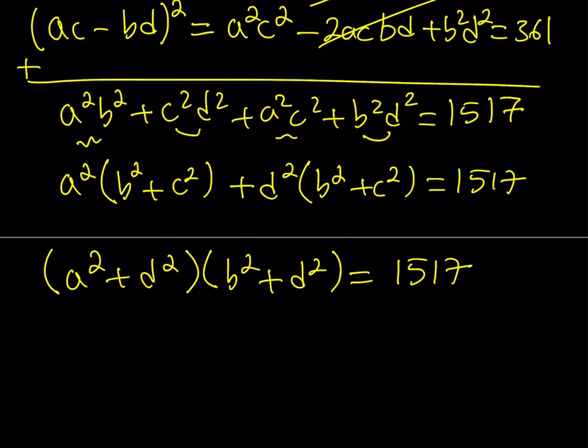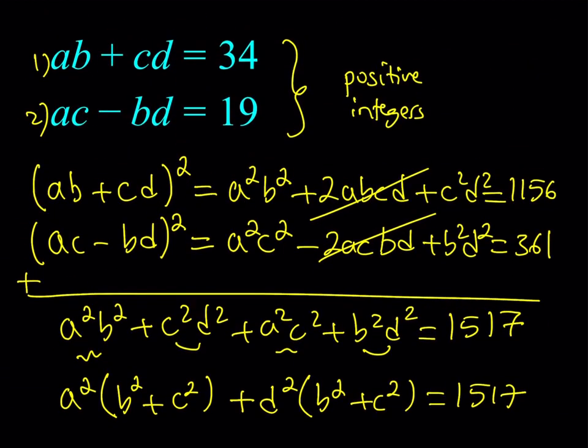And we're going to get something real nice. For example, if you add these two things, A squared B squared, and then C squared D squared, plus A squared C squared, plus B squared D squared, is going to equal 1,156 plus 361, which should equal 1,517. Okay? Now, what is so cool about this is that this expression is factorable. Why is it factorable? Because you can factor by grouping.